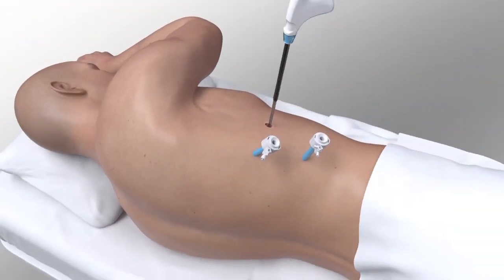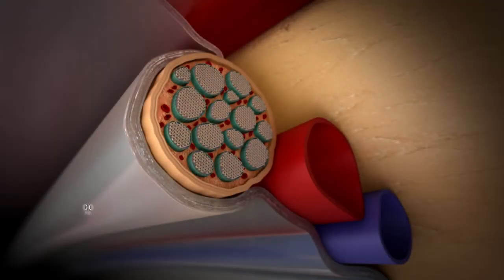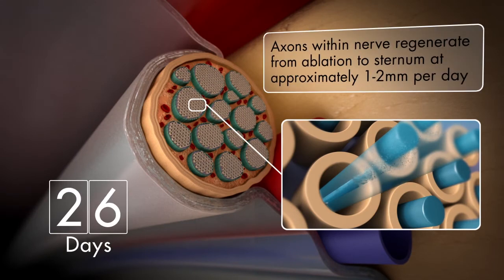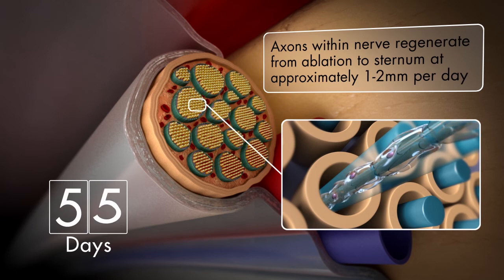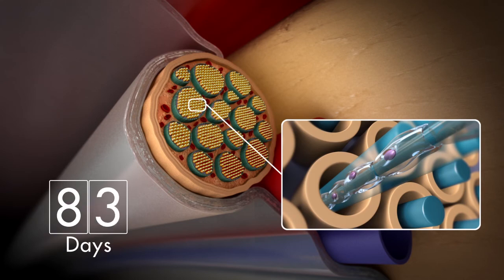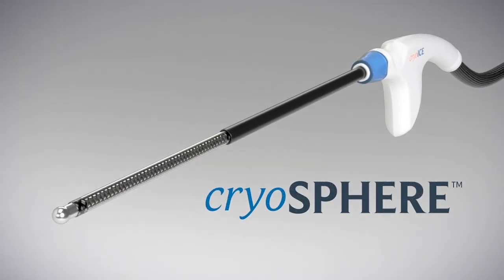Several days following Wallerian degeneration, the axons start regenerating within the tubule structures of the nerve at a rate of one to two millimeters per day, eventually reaching and re-innervating the full length of the intercostal nerve. Cryosphere: the coolest innovation in pain management.